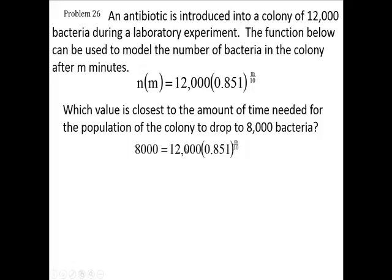The first thing we're going to do is divide both sides by 12,000. So you have 8,000 divided by 12,000, and 12,000 divided by 12,000 cancels, leaving (0.851)^(M/10) = 8,000/12,000. That's 2/3—8 over 12 is 2/3.